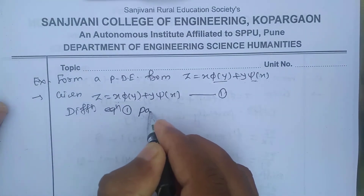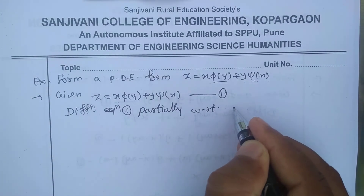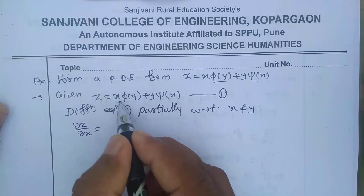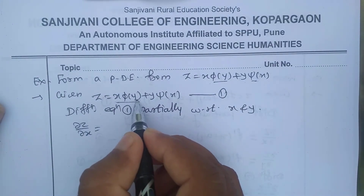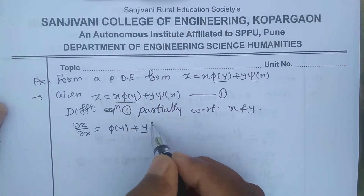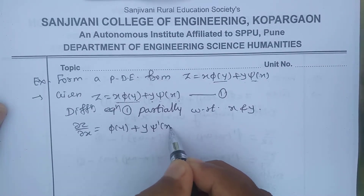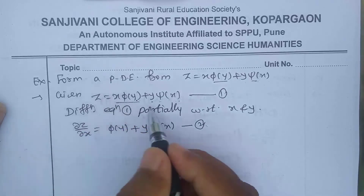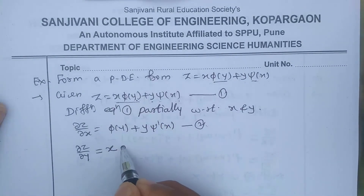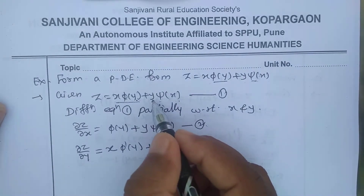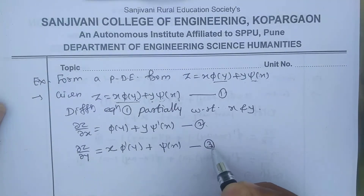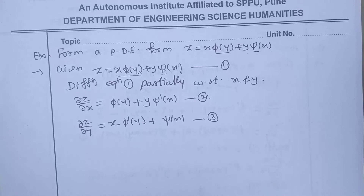Differentiating equation one partially with respect to x and y. For ∂z/∂x: φ(y) is a function of y only, so it is a constant term and the derivative of x is 1, plus y is a constant with respect to x and the derivative of ψ(x) is ψ'(x) — call this equation number two. Differentiating one with respect to y: x is a constant, so the derivative of φ(y) is φ'(y), plus ψ(x) is a constant and the derivative of y is 1 — call this equation number three.